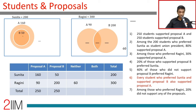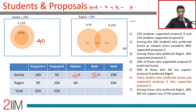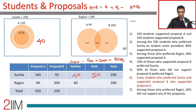For Sunita: 160 here and 50 here, so neither is 40, and both is 50 since B sits completely inside A. For Ragini: A union B equals A plus B minus A intersection B, so 240 equals 90 plus 200 minus A intersection B, giving A intersection B equals 50. Therefore A only is 40, B only is 150, and both is 50. The total neither for Ragini is 60.